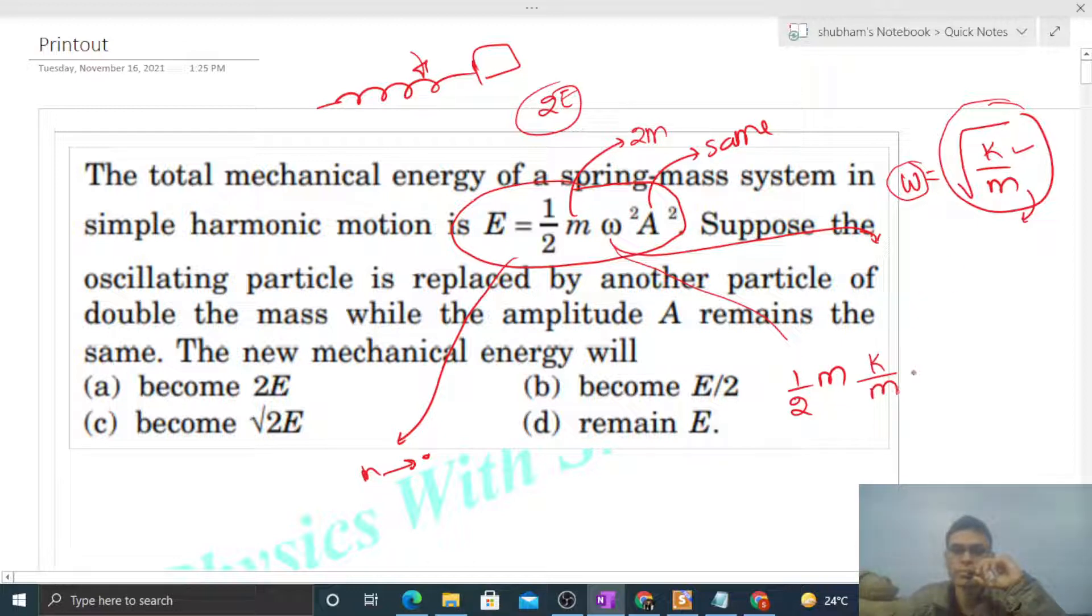That will be (k/m) times A², which simplifies to E = (1/2)kA². You can see the total mechanical energy is mass-independent. In a spring-block system, if amplitude and spring constant are the same, then total mechanical energy doesn't depend on mass.